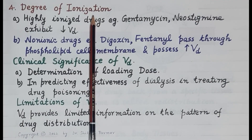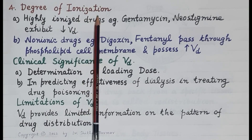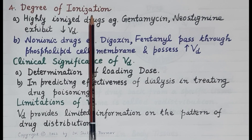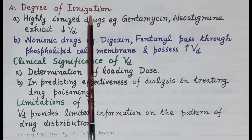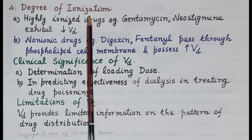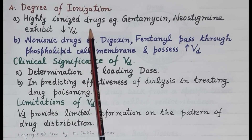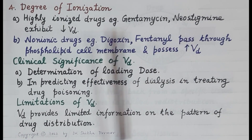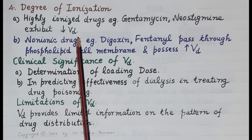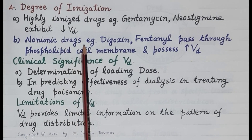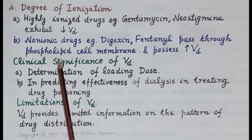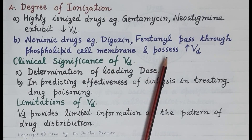The next important factor is the degree of ionization of a drug. Highly ionized drugs are hydrophilic — they do not cross the cell membrane and are largely confined to the plasma. Non-ionic drugs are lipophilic — they easily cross cell membranes and are widely distributed in extravascular tissues. Highly ionized drugs, such as gentamicin and neostigmine, exhibit low volume of distribution. Non-ionic drugs like digoxin and fentanyl pass through the phospholipid cell membrane and exhibit a high volume of distribution.